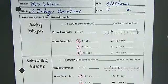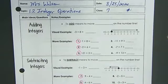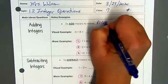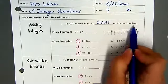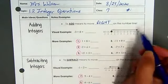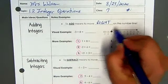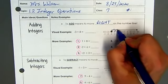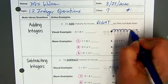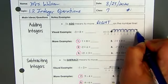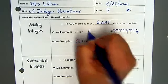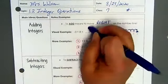So for adding integers, to add means to move to the right on the number line. So for the visual example, we have -3 + 8. Going from -3, I'm adding 8. So I'm going to actually go 1, 2, 3, 4, 5, 6, 7, 8, and see where I land. And I'm landing on 5, positive 5. So therefore, my answer is 5.